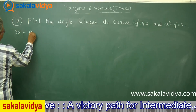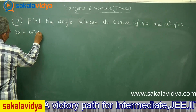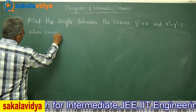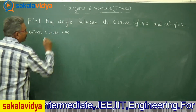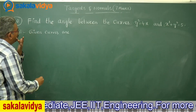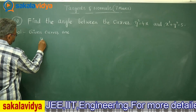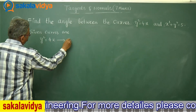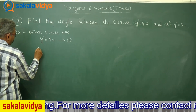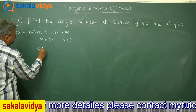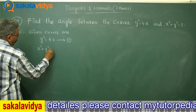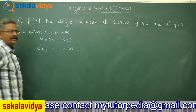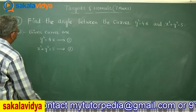The given curves are y² = 4x, which represents a parabola, and x² + y² = 5, which represents a circle.